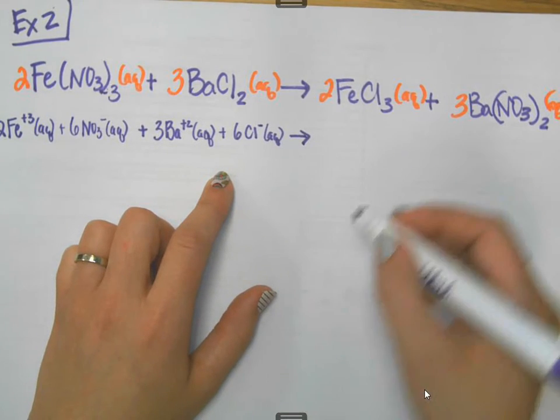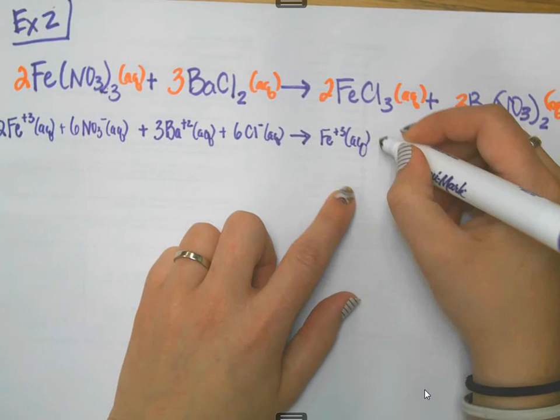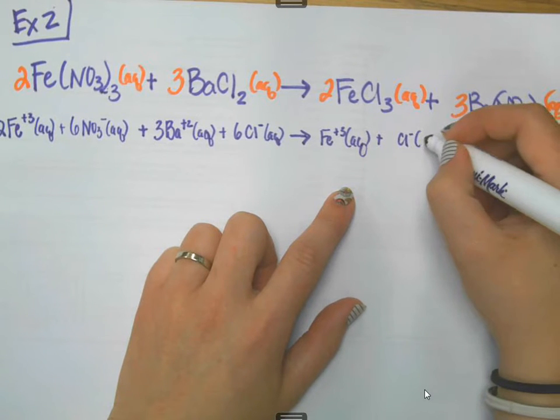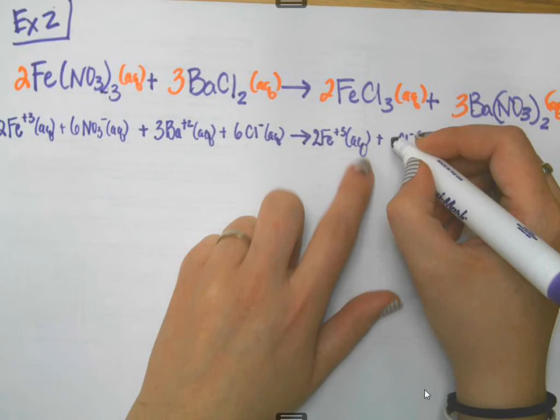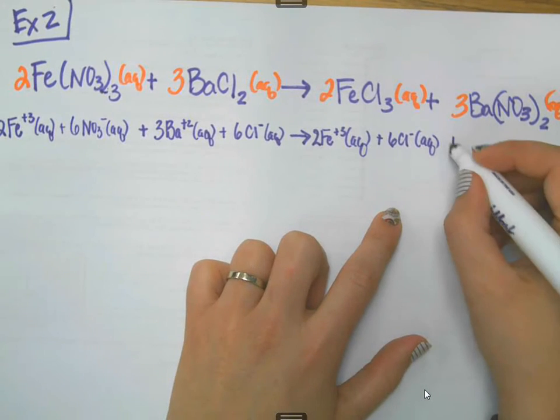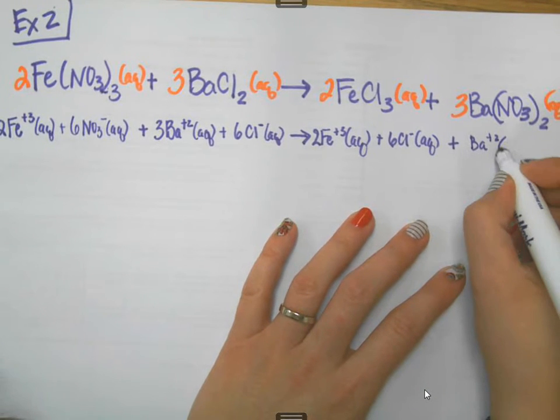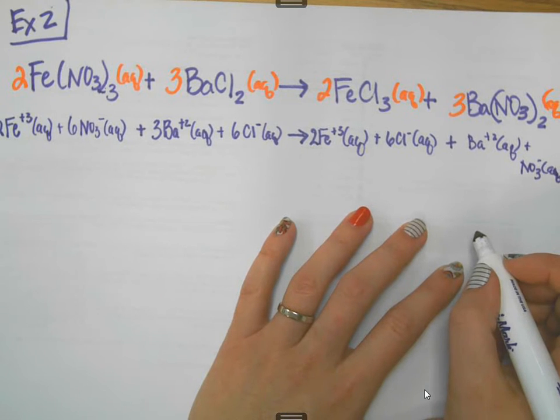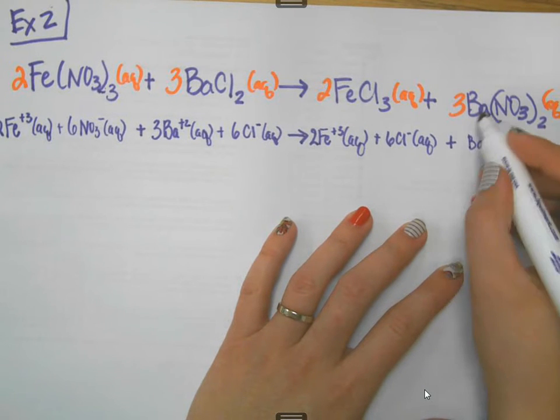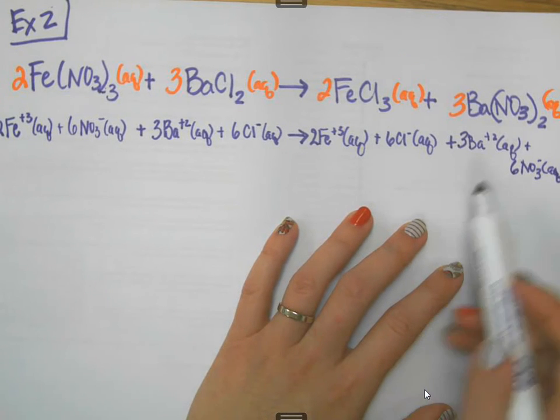As we keep going, I've got iron three again. It will be aqueous. And, I've also got chloride ions again, which will be aqueous. There's two irons, and there's six chlorines, two times three. And, then last but not least, we have barium ions again. And, we also have nitrate ions again over here, which are kind of oozing off the screen. There's going to be three bariums and six nitrates because of the two per group times three.